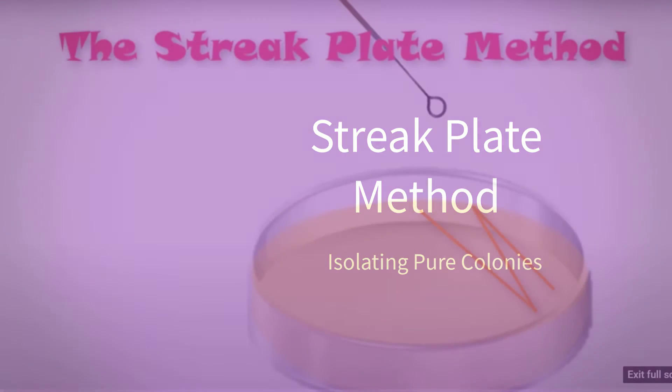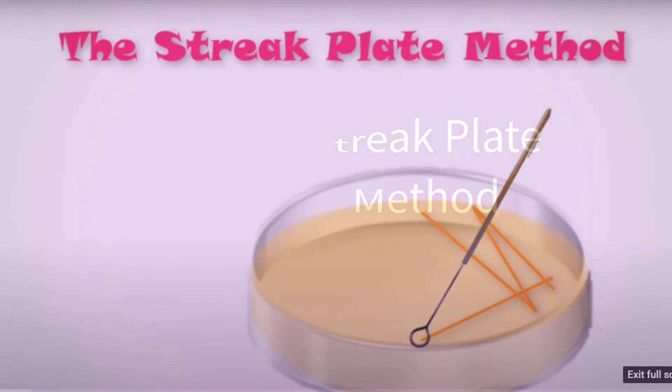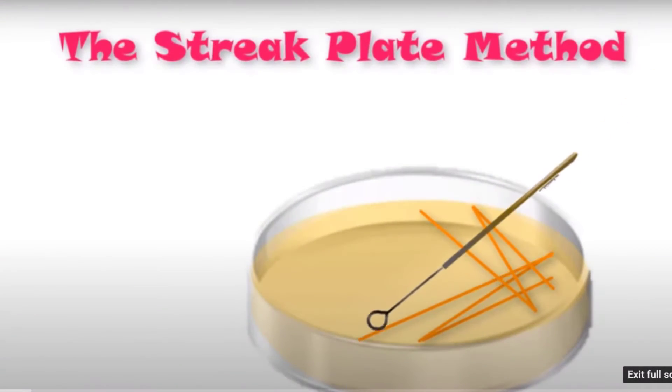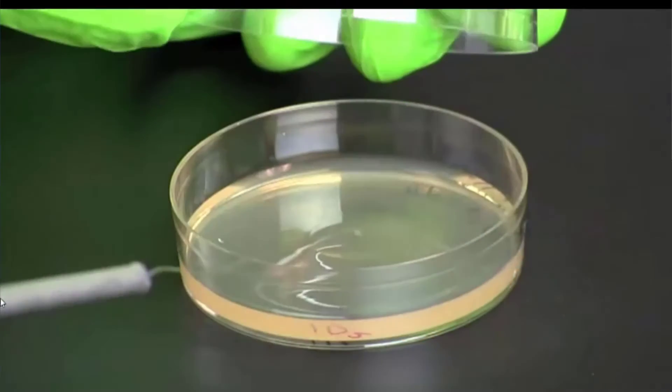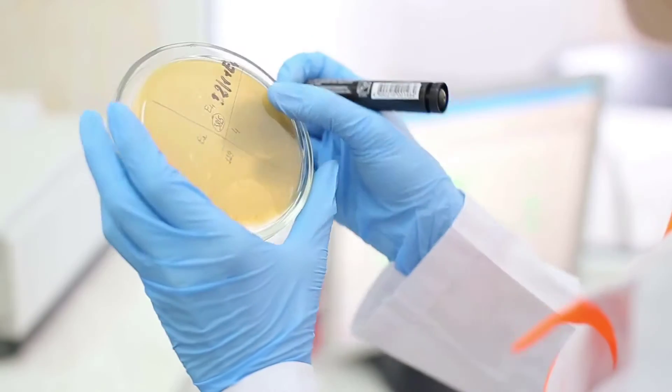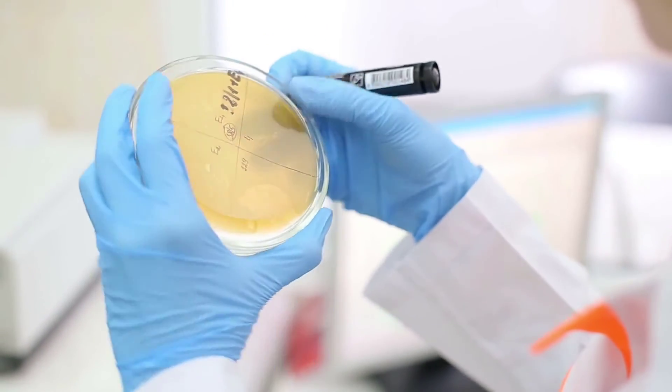A common method for the isolation of a pure culture from a mixture is by streaking plates. The inoculum is streaked over the agar surface to isolate the colonies on at least a portion of the plate.